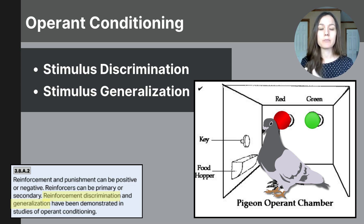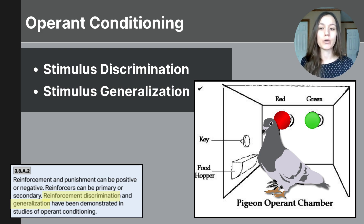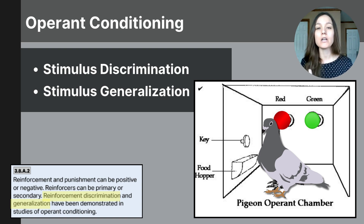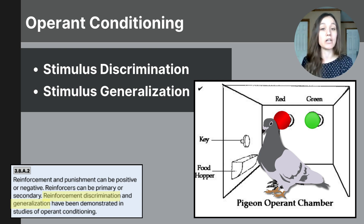In operant conditioning, stimulus discrimination refers to the process where an animal learns to respond to a specific stimulus and not to others — distinguishing between different stimuli and responding only to the one that signals reinforcement. In Skinner's operant chamber, he taught pigeons to peck when they saw a green light. When the green light was on they would peck, but they learned to discriminate between green and red — when the red light was on, they would not peck. The pigeon learned to discriminate because pecking with the green light was the reinforced behavior.